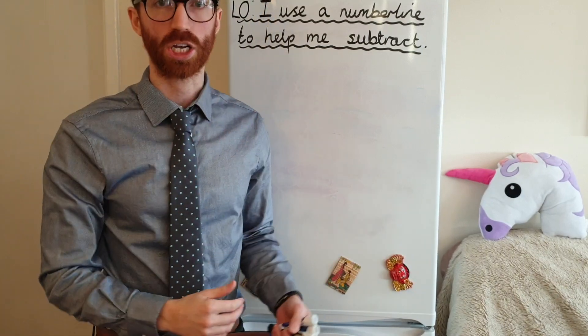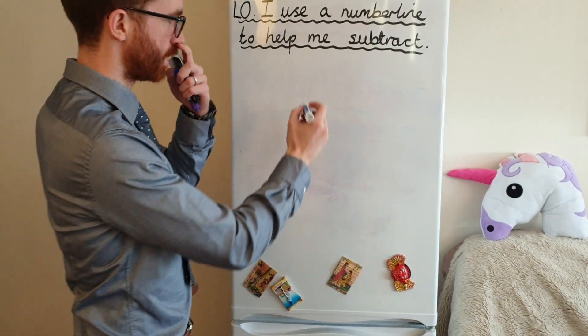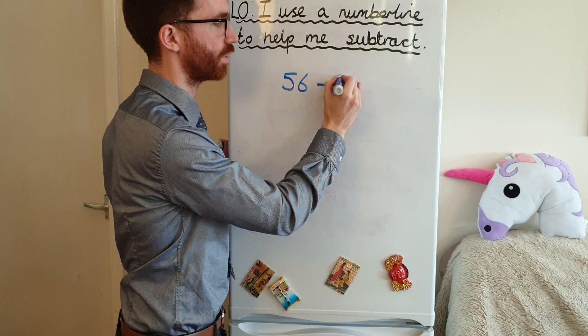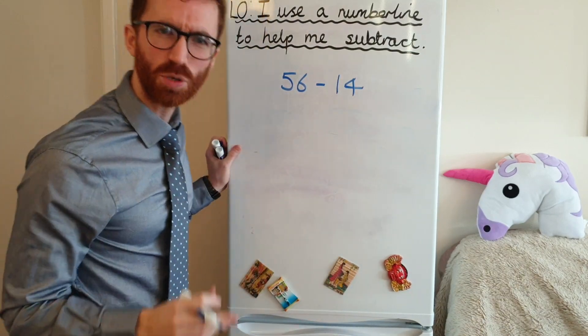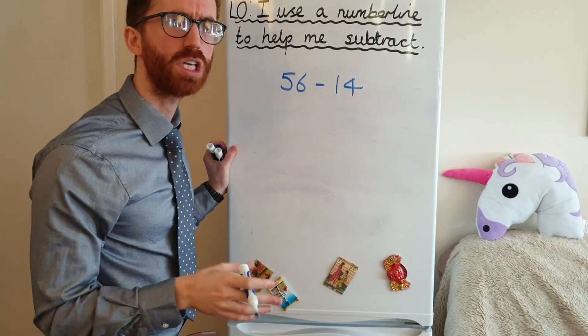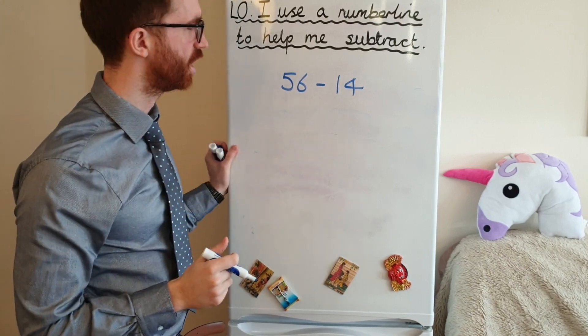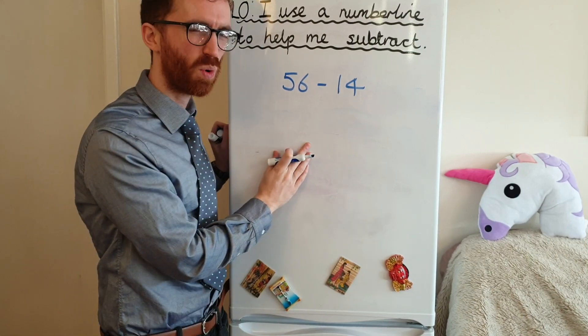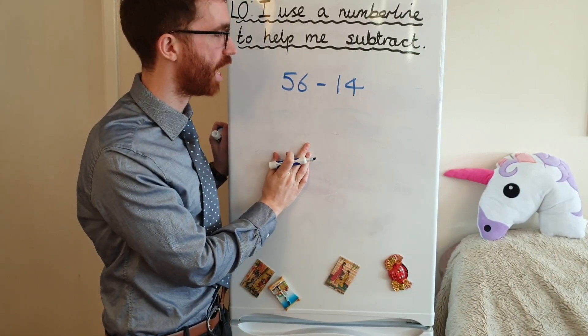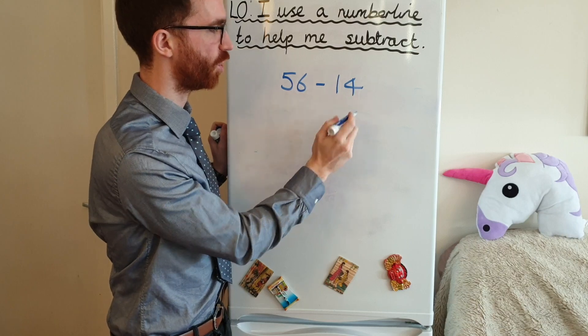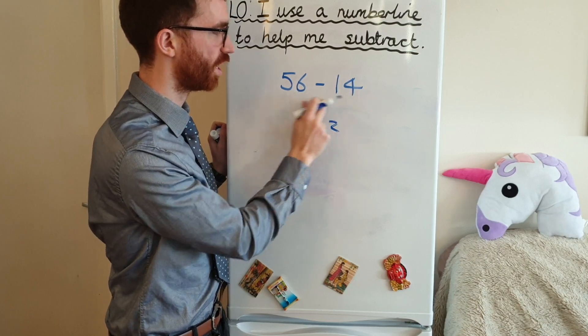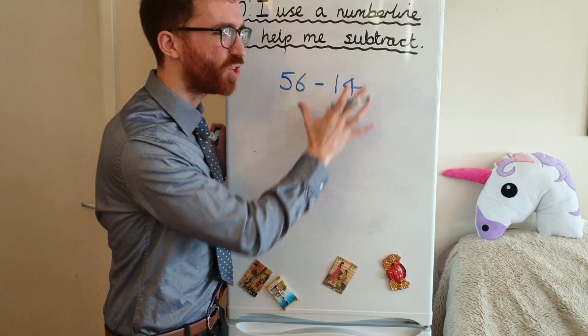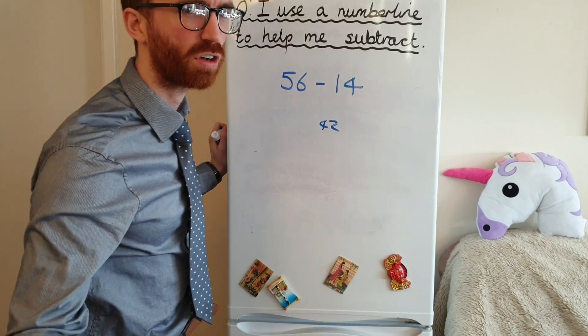I use a number line to help me subtract. Let's just get straight into it. So if I had a subtraction question a bit like this, 56 take away 14. I've got to be thinking to myself now, I'm a year three, year four sort of mathematician, do I really need to use a written method for that? When I look at these numbers, actually what I could just do, I think in my head, 6 take away 4 is 2, 50 take away 10 is 40. Oh, the answer is 42. I don't really need to get into a written method to solve this problem.